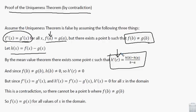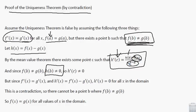We know a few things about these elements. h of b is not zero, because f of b does not equal g of b — so when we subtract f of b minus g of b, we get something other than zero. h of a, on the other hand, is zero, because f of a equals g of a, so f of a minus g of a equals zero. h of b is something, and b minus a is also something, because b and a cannot be the same.